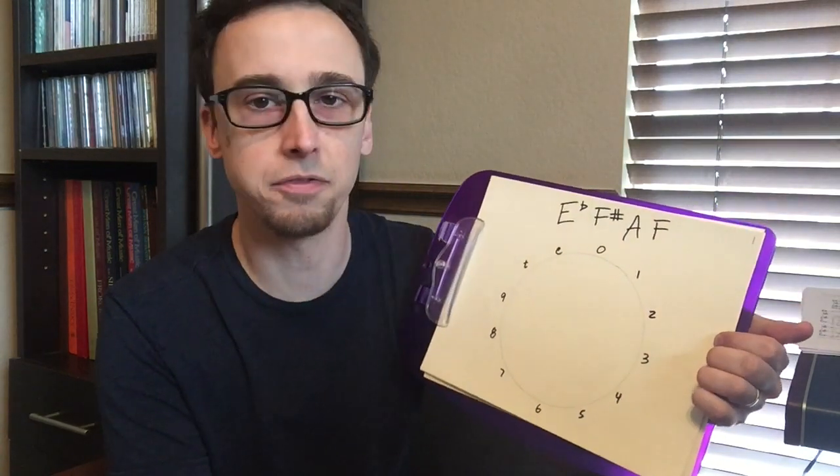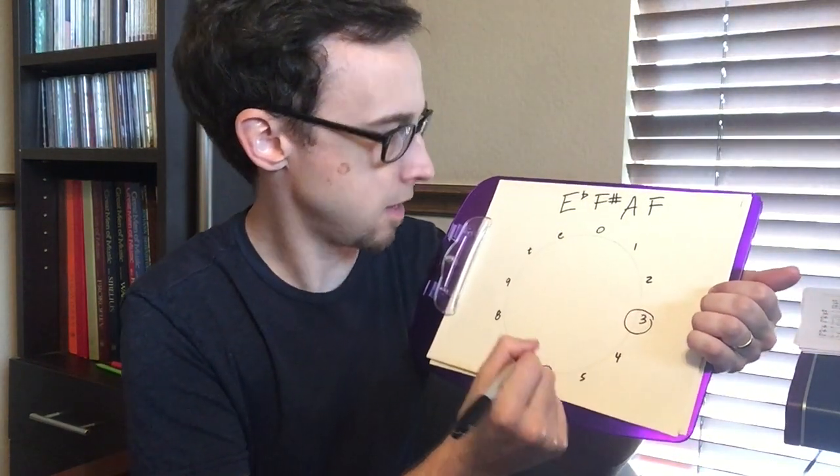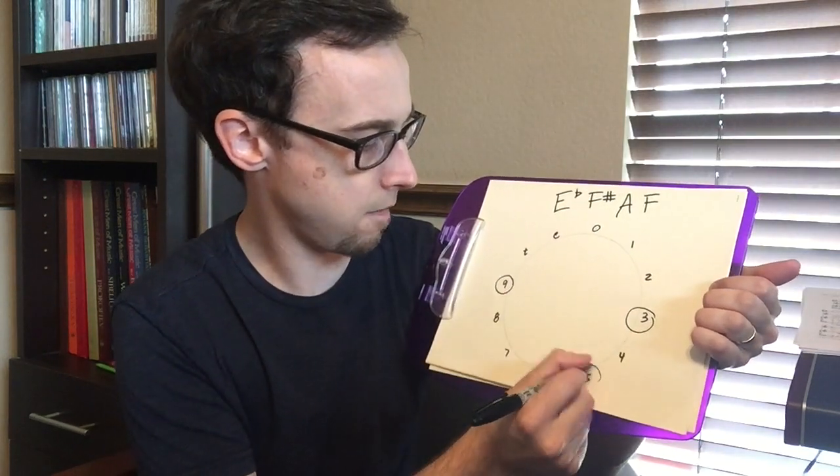So we're going to run down a few examples here. First off, I have four pitches: E flat, F sharp, A, and F. We put them onto the clock face: E flat, F sharp, A, and F.